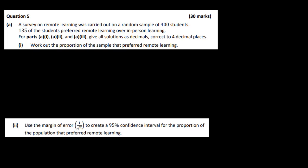Work out the proportion of the sample that preferred remote learning. This is very straightforward — it's a proportion type question. So we're looking at what's called a p-hat, and it is 135 over 400. So to 4 decimal places, it's 0.3375. That's part A done.